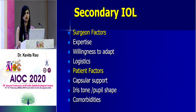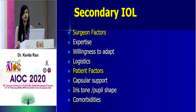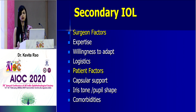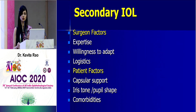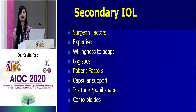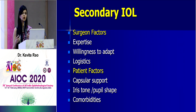What are the various factors to consider when deciding about a secondary IOL? Looking at surgeon factors: What is your expertise? Are you willing to learn scleral fixation, glued IOL, or the Yamane technique? What is your willingness to adapt — older techniques or newer ones? What are the logistics in your OT? What kind of lens is available? A three-piece IOL can be glued versus an iris-fixated IOL which may not be available.